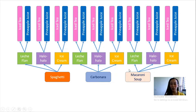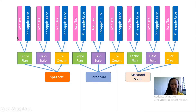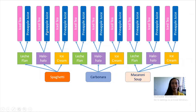For carbonara, there is also leche flan, halo-halo, and ice cream. And for macaroni: leche flan, halo-halo, and ice cream. On the third layer, we have the two beverages: iced tea and pineapple juice. The first student can have spaghetti, leche flan, and iced tea. The second one: spaghetti, leche flan, and pineapple juice. The third: spaghetti, halo-halo, and iced tea. The fourth: spaghetti, halo-halo, and pineapple juice. To count this manually, we count 2, 4, 6, 8, 10, 12, 14, 16, 18.